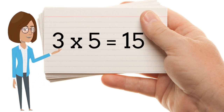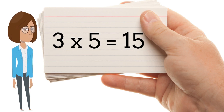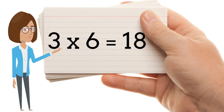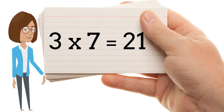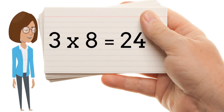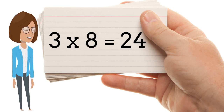3 times 5 is 15. 3 x 6 is 18. 3 x 7 is 21. 3 x 8 is 24.